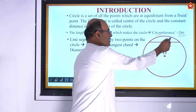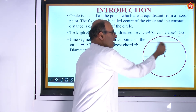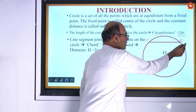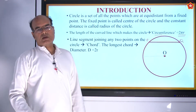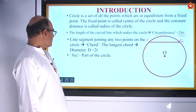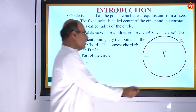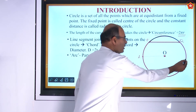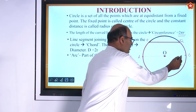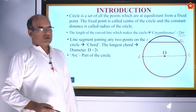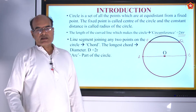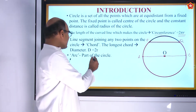The line segment joining any two points on the circle is called a chord. Here points P and Q are on the circle, and the line segment PQ is a chord. If a chord passes through the center of the circle, it is the longest chord, called the diameter of the circle.